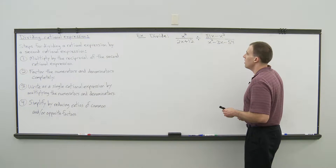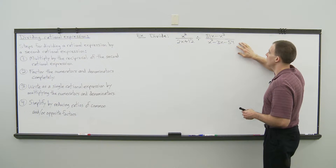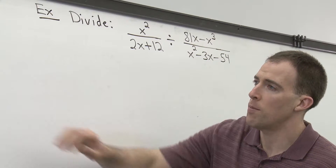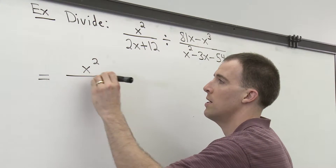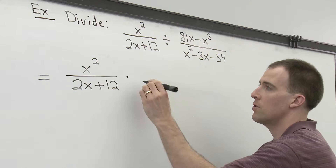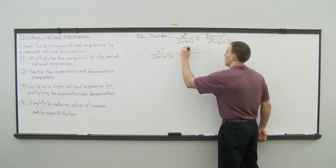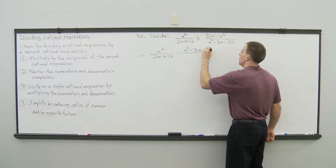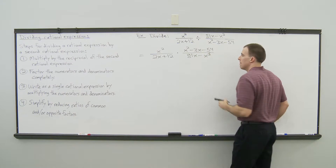Here's an example. Divide: we have x squared over 2x plus 12, divided by 81x minus x cubed over x squared minus 3x minus 54. The first thing to do is multiply by the reciprocal of the second rational expression. Keep the first fraction as is — x squared over 2x plus 12 — change the division to multiplication, and take the reciprocal of the second rational expression, which is now x squared minus 3x minus 54 divided by 81x minus x cubed.